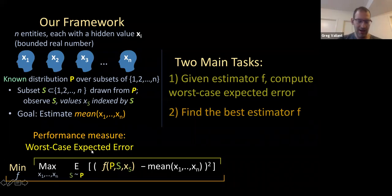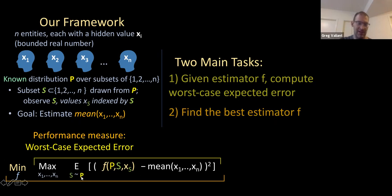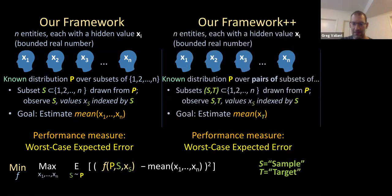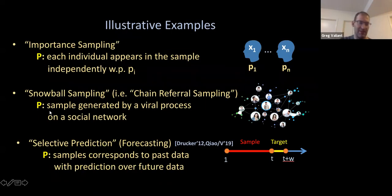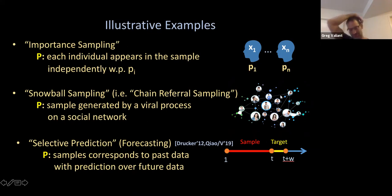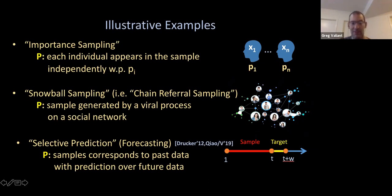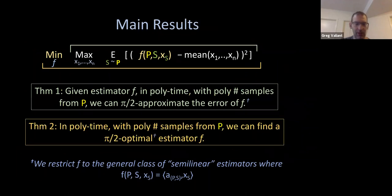We consider the worst-case expected error, where the worst case is over the data values and the expectation is over the sampling process. The estimate is some function of the distribution p, the set of sampled people s, and the data values indexed by them. In the importance sampling setting, good standard estimators do take p into account — the standard estimator upweights the contributions of the first half of the people. There are two main tasks: given an estimator, how do you estimate this worst-case expected error, and more difficult, how do you find the best estimator for a given distribution p?